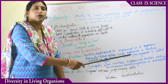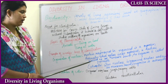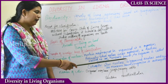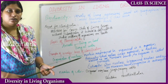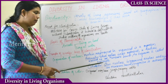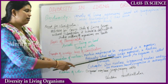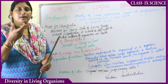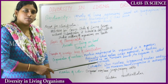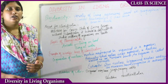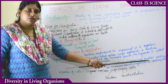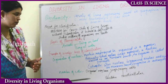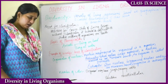In prokaryotes, the nucleus is not organized — that is, the nuclear material is not covered by a nuclear membrane; it is not membrane-bound. So the organism is called a prokaryote. In a eukaryote, the nucleus is organized and the nuclear material is membrane-bound. Then one more basis of classification was the number of cells.